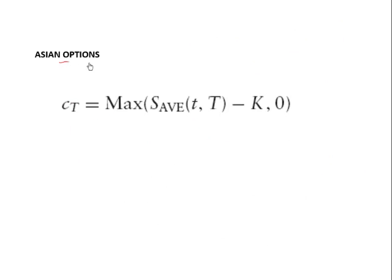In an Asian option or Asian call option, the payoff depends on the average stock price over the period. It is not the spot price at maturity minus the strike; it is the average stock price over the period minus the strike price that determines the payoff. If the average has been higher than the strike, there will be a payoff. If the average has been lower, there will be no payoff. Asian options look at the entire time period and take an average stock price to compute the payoff.